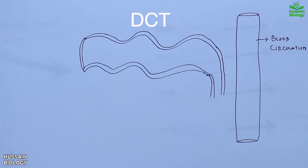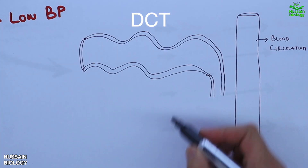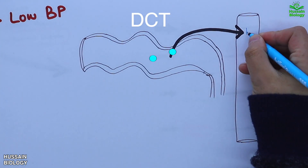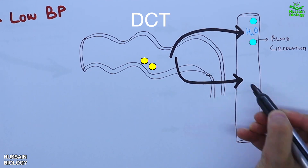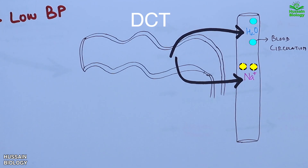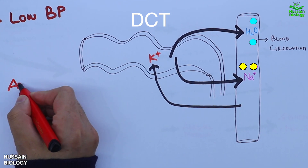When there is low blood pressure, aldosterone from the adrenal gland is released and starts regulating blood pressure. Aldosterone mediates water retention — water from the distal convoluted tubule is reabsorbed into the bloodstream, and sodium ions are also reabsorbed into the bloodstream. Meanwhile, potassium ions flow from the bloodstream into the distal convoluted tubule. So aldosterone stimulates sodium and water retention, thereby increasing blood pressure.